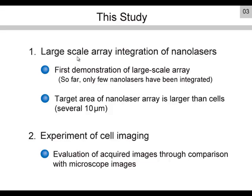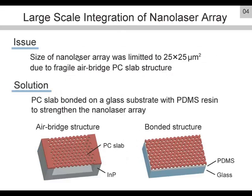In fabricating the large-scale integrated nanolaser array, there was an issue that the size of the nanolaser array was limited to 25 by 25 square microns due to the fragile, freestanding PC slab structure. In this study, the PC slab is bonded on a glass substrate with PDMS resin to strengthen the nanolaser array. PDMS is a very standard polymer for bio-science.